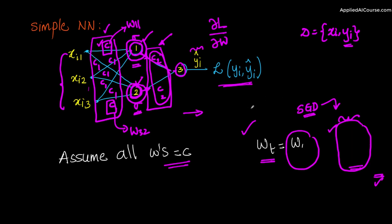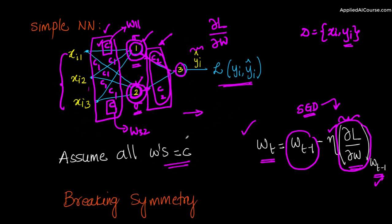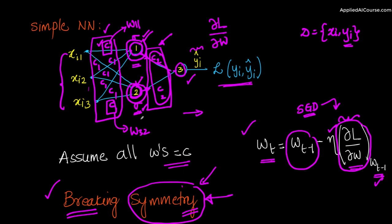The reason we don't initialize all the neurons in a given layer — or the whole network — to the same value is because we want to break symmetry. This is a term you can encounter in many research papers and textbooks on deep neural networks. Symmetry here means whatever this neuron is learning, the same thing that neuron is also learning. We want each neuron to learn something slightly different, so we have the power of the deep neural network where neurons learn different aspects that combine in deeper layers.